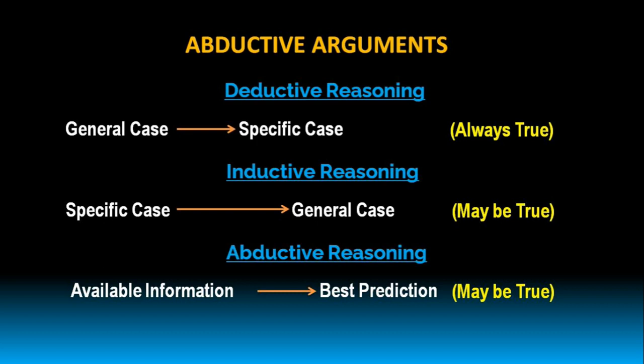It's always important to remember that deductive arguments move from general case to specific case, and the conclusion is always true. Inductive reasoning moves from specific case to general case, and the conclusion may be true or may not be true — inductive arguments are intended to be strong arguments, but there is no guarantee. And in the case of abductive reasoning, based on the available information, a best prediction is given. So in abductive reasoning, the conclusion is always a prediction — it can be the best prediction, but it may be true or may not be true.